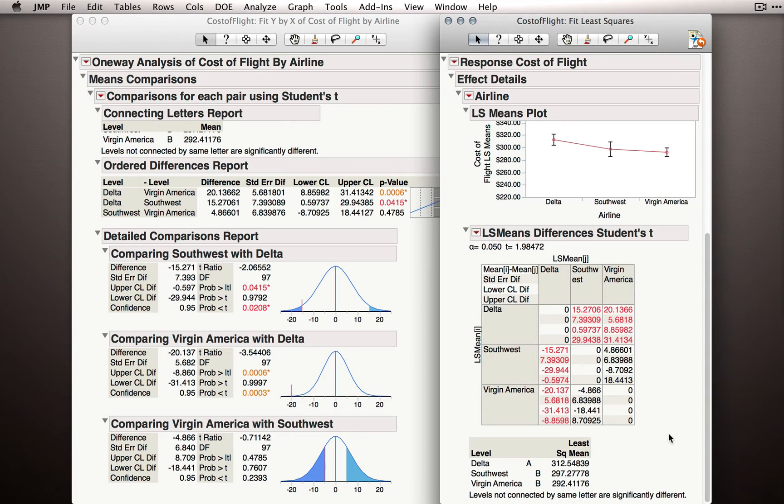We're given a slightly different form of the output, but in essence we're given the same data. In this case, we have a table that gives us for each combination, that is, each comparison: delta vs. southwest, delta vs. virgin, and southwest vs. virgin, including the redundant cells.